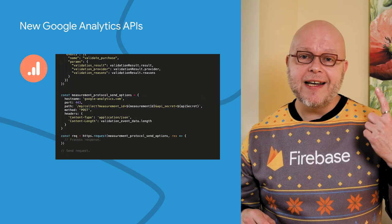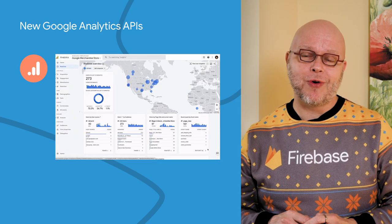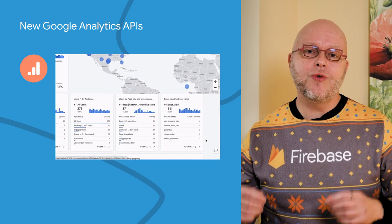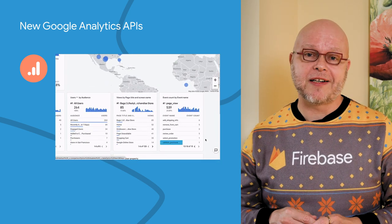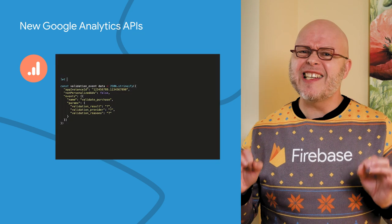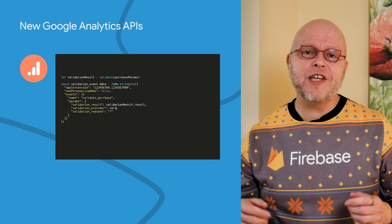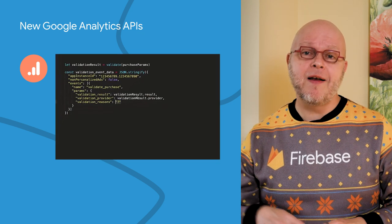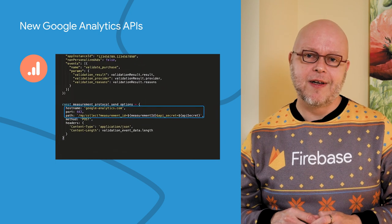The first API is the Google Analytics 4 Measurement Protocol, which lets you log events directly to Google Analytics. This is especially useful when you want to augment your client-side data with server-to-server calls to gain new insights.